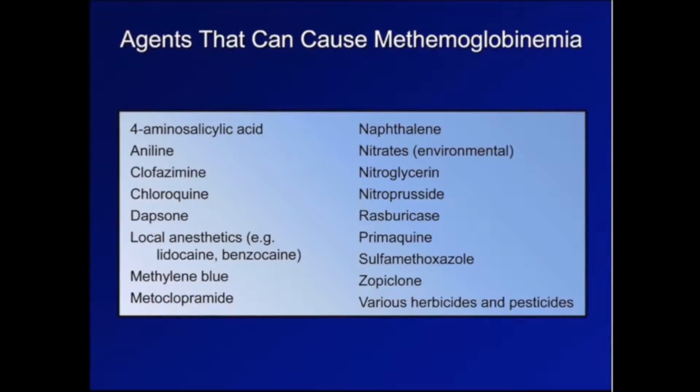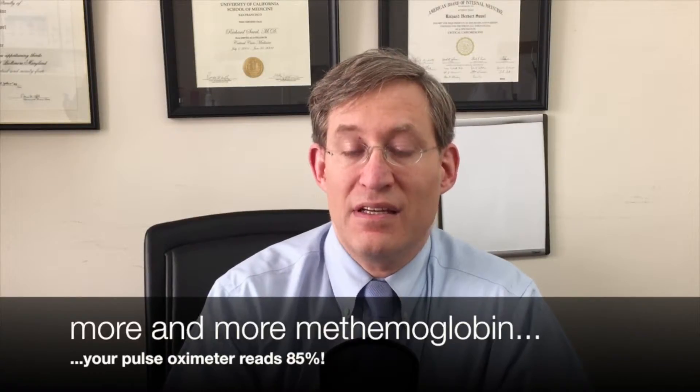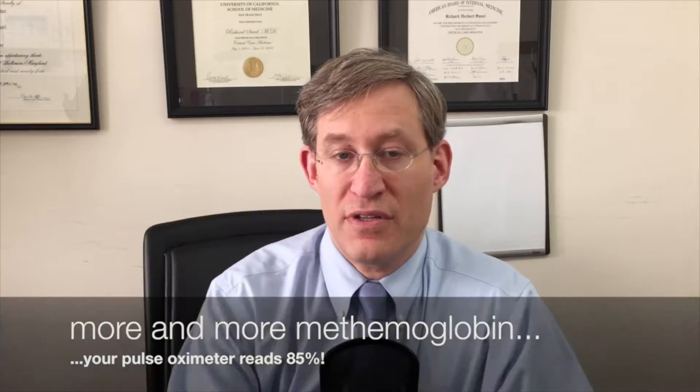There are certain important common drugs that can cause methemoglobinemia, and some of them are listed here. Some of the important ones include dapsone as well as the local anesthetics. It's important for you to understand that as one gets more and more methemoglobin in one's body, the pulse oximeter reads that as 85% oxygen saturation. So the question is: how can one determine how much methemoglobin or carboxyhemoglobin is present in a patient where you may have clinical suspicion? And the answer is a co-oximeter, which most of the time has to be done in a blood gas lab that has a co-oximeter machine.